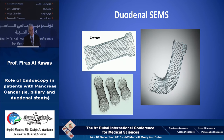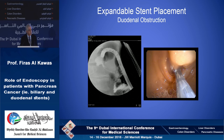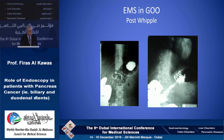Duodenal stents are larger than biliary stents and have been available for quite some time. Most available stents are uncovered, though some are covered. For the proficient endoscopist, placement is technically straightforward: advance a wire through the area of obstruction without needing to dilate, then deploy the stent over the wire in the area of obstruction. Patients can usually resume oral intake quickly, and this can be done even in patients who have had a Whipple resection.